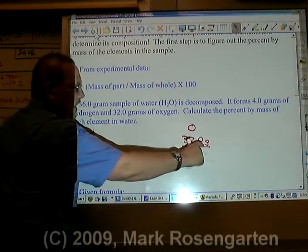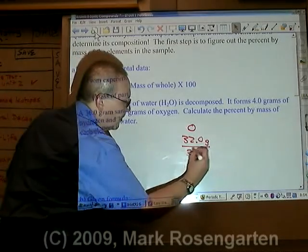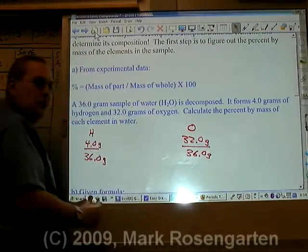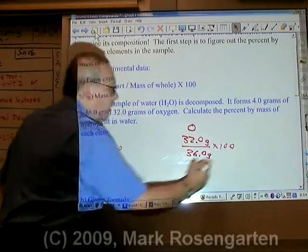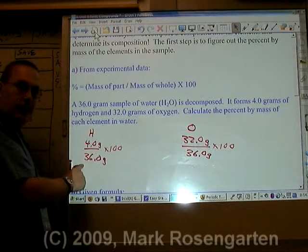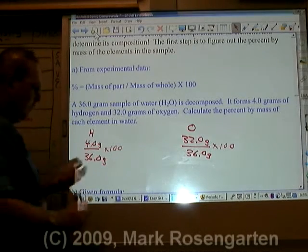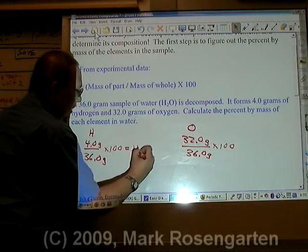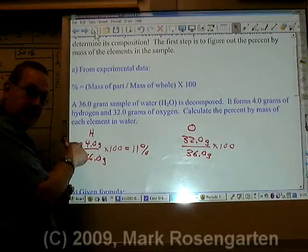4 plus 32 adds up to 36.0. Then you multiply by 100 and that will give you the percentage. Hydrogen makes up 4 of the 36 grams, oxygen makes up 32 of the 36 grams. So hydrogen makes up 11 percent, rounding to two sig figs.